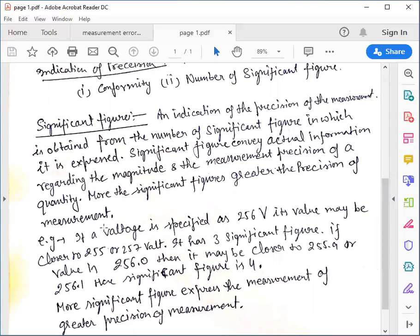More significant figures, greater the precision of measurement. To understand significant figures, let us take an example. Suppose a voltage is specified as 256 V. Its value may be closer to 255 or 257. So it has three significant figures.